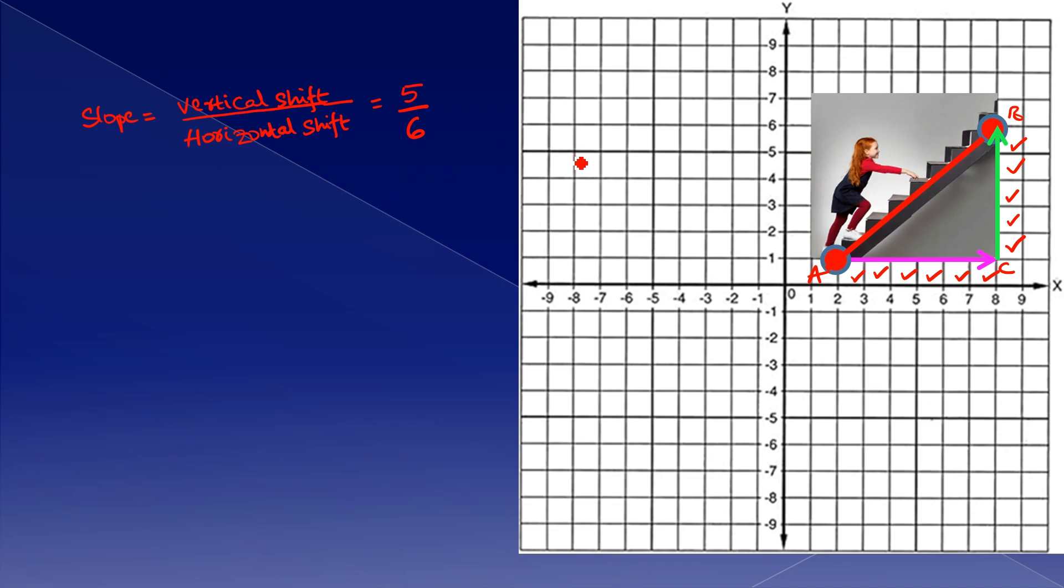Now, if you observe the numbers, here the point B on the y-axis is 6 units, and the point C on the y-axis is 1 unit.